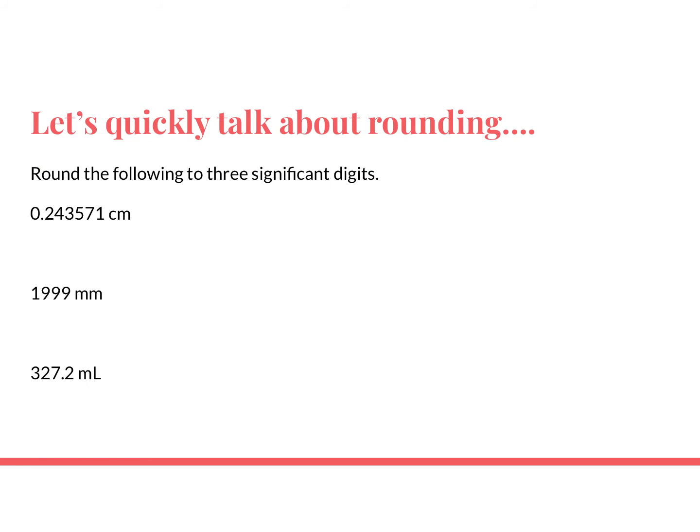Sometimes you have to round a number, so let's talk about how you round with sig figs. I'm going to be rounding all of these numbers to three sig figs. The second number rounded to three sig figs could be written as 1990 mL, or in scientific notation as 2.00 × 10². And the last number would be rounded to 327 mL. Notice: if the digit is 5 or above, you round up; if it's below 5, you don't round up.